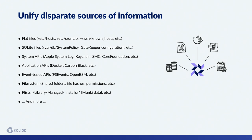So what are these disparate sources of information, particularly on macOS? There are flat files like the /etc/hosts file, the crontab file, and SSH known hosts. There are SQLite databases. There are system APIs we'd have to write scripts for otherwise. There are application APIs like Docker and Carbon Black. There are event-based APIs like the OpenBSM auditing system or FSEvents for file system changes. And there's structure and metadata available in the file system, including plists which are all over the place on Mac.